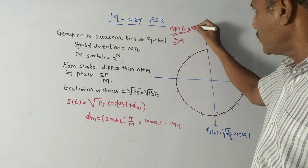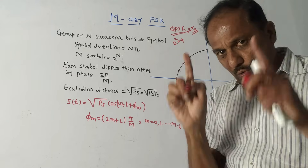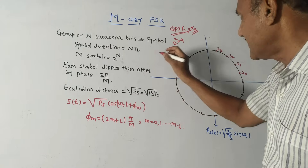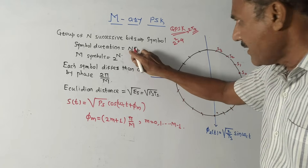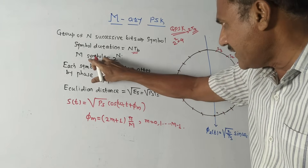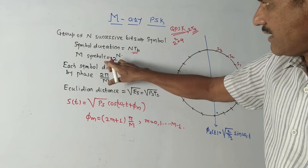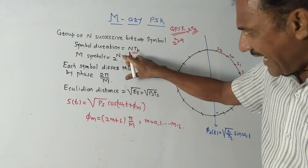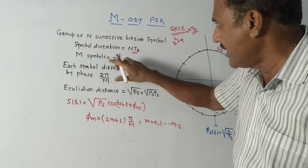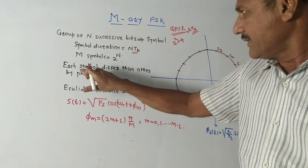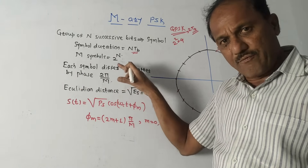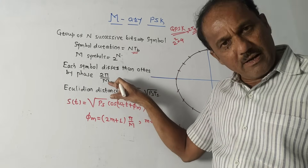In QPSK the symbol duration was 2Tb, where Tb is the bit duration. In M-ary PSK it is n × Tb, because we are forming a group of n bits. M symbols are related to n bits as M = 2 raised to n. Each symbol differs from every other symbol by a phase of 2π/M radians.